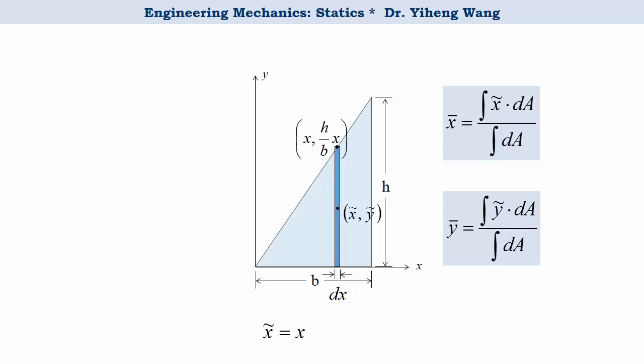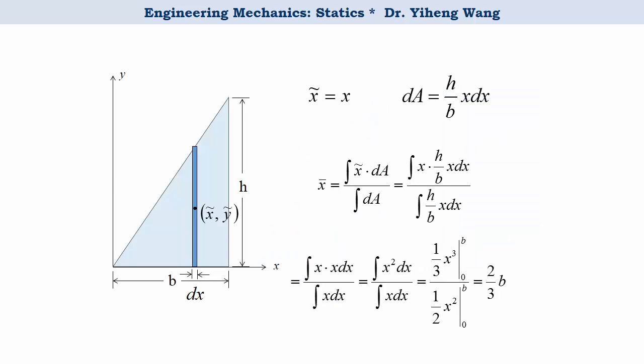And dA equals the area of the rectangle, which is the height, h over b times x, times the width, which is dx. We plug these into the first equation, therefore x bar equals two-thirds b, just like we got using the first approach. But here as you can see, we only need to integrate over one variable x.